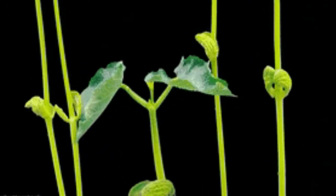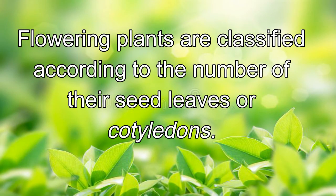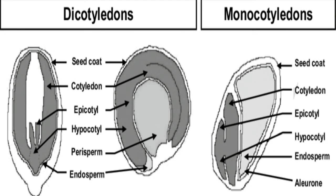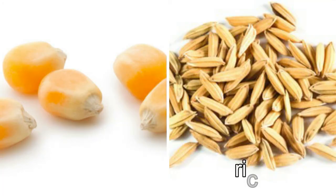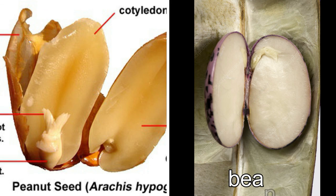Flowering plants are classified according to the number of their seed leaves or cotyledons. Plants that produce seed with one seed leaf are called monocotyledons, or monocots. Corn and rice plants are monocots. Plants that produce seed containing two seed leaves are called dicotyledons, or dicots. Nuts and beans are dicots.